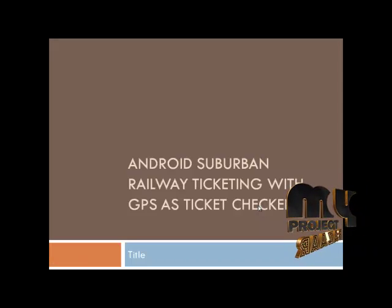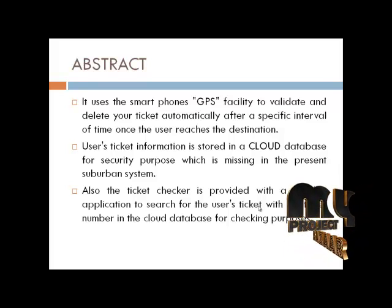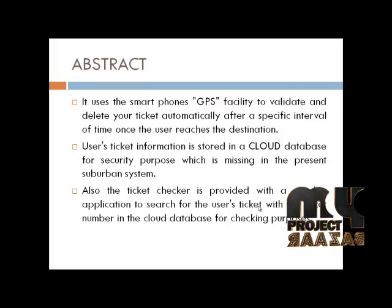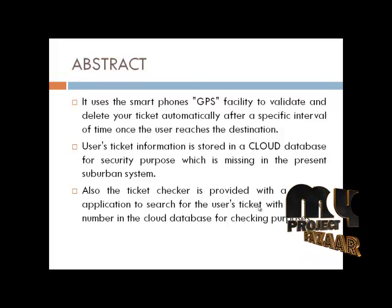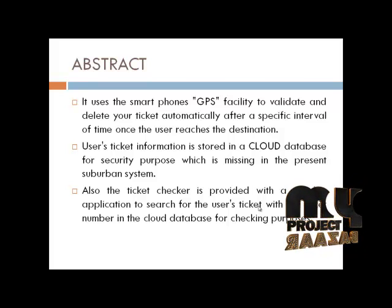The title of the project is Android Suburban Railway Ticketing with GPS as a ticket checker. The abstract: we are using Android applications with a cloud-based approach. We have client and server sides — the client is the user side, the server is the ticket checker side. User information is stored in the database for security. The ticketing system is fast, related to queuing models, using cloud-based MySQL and PHP connectivity.